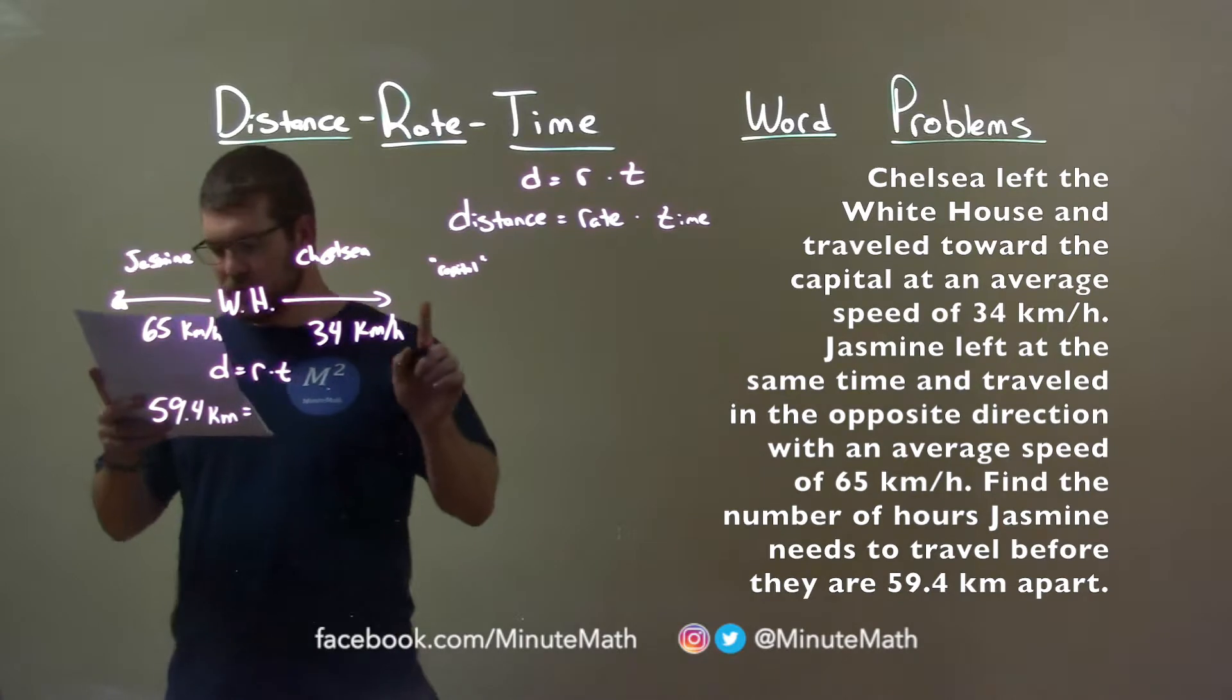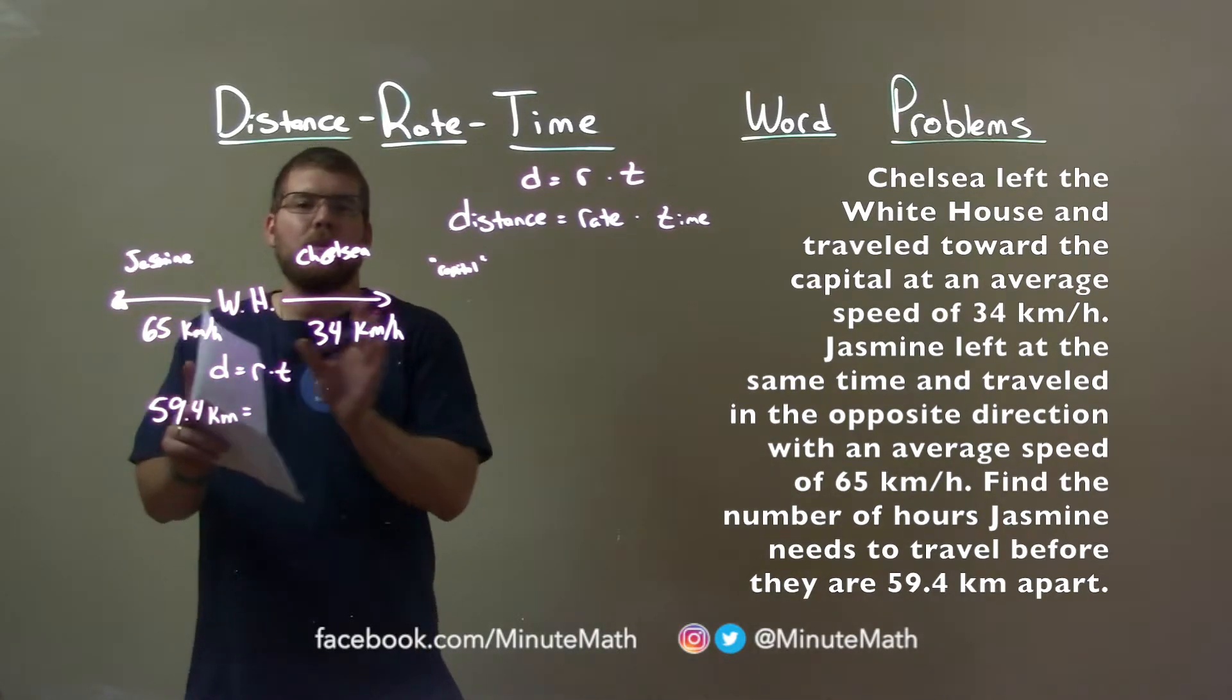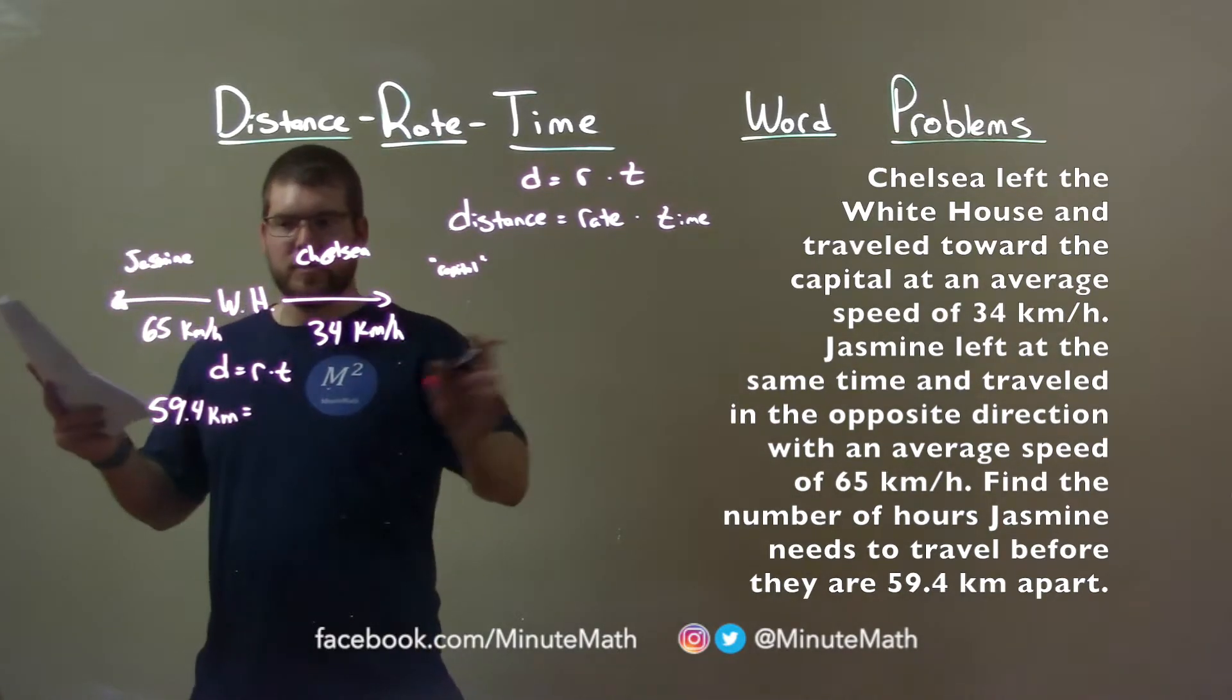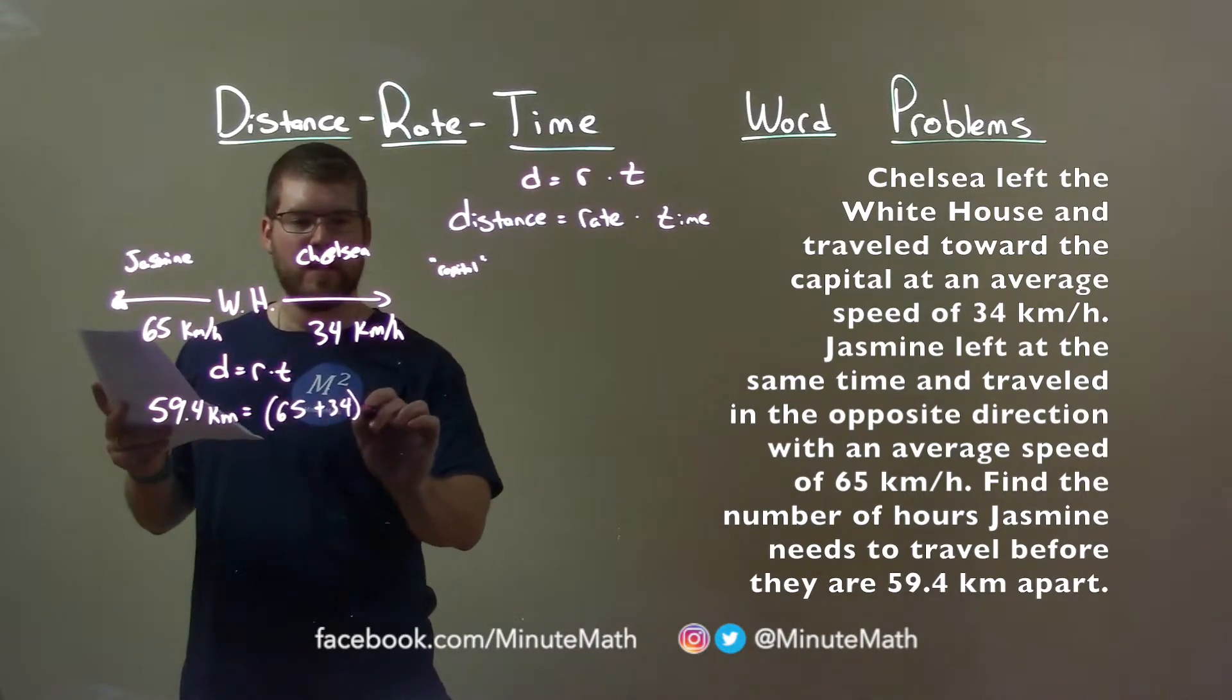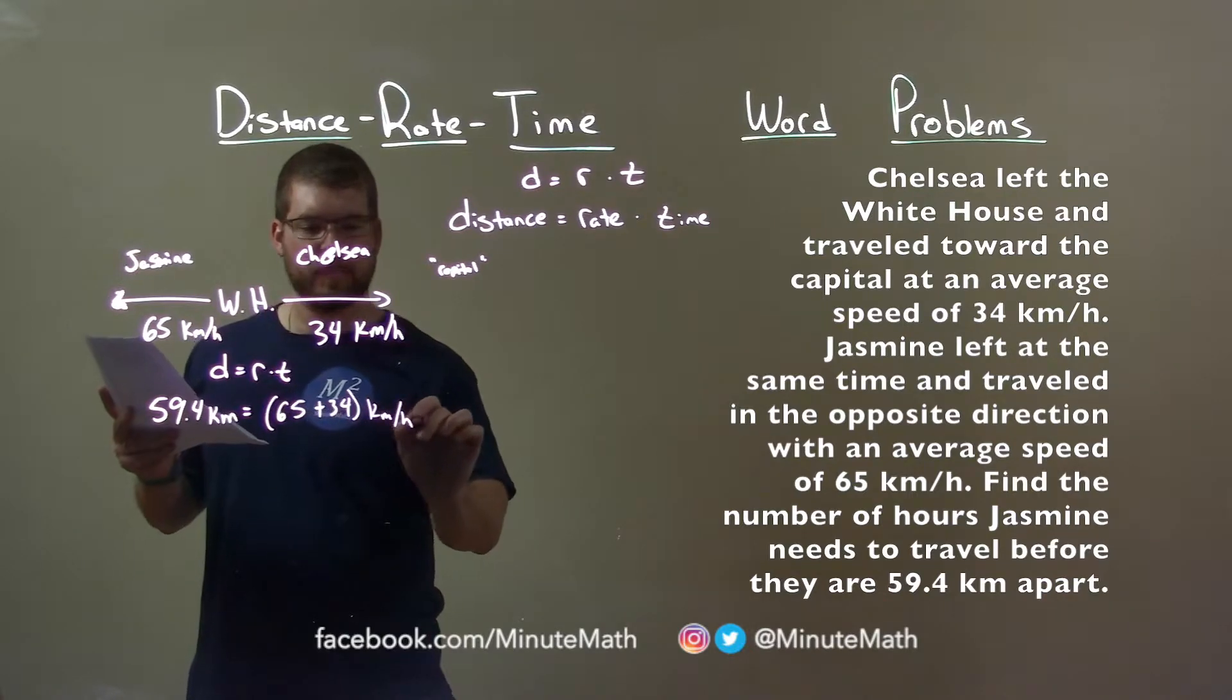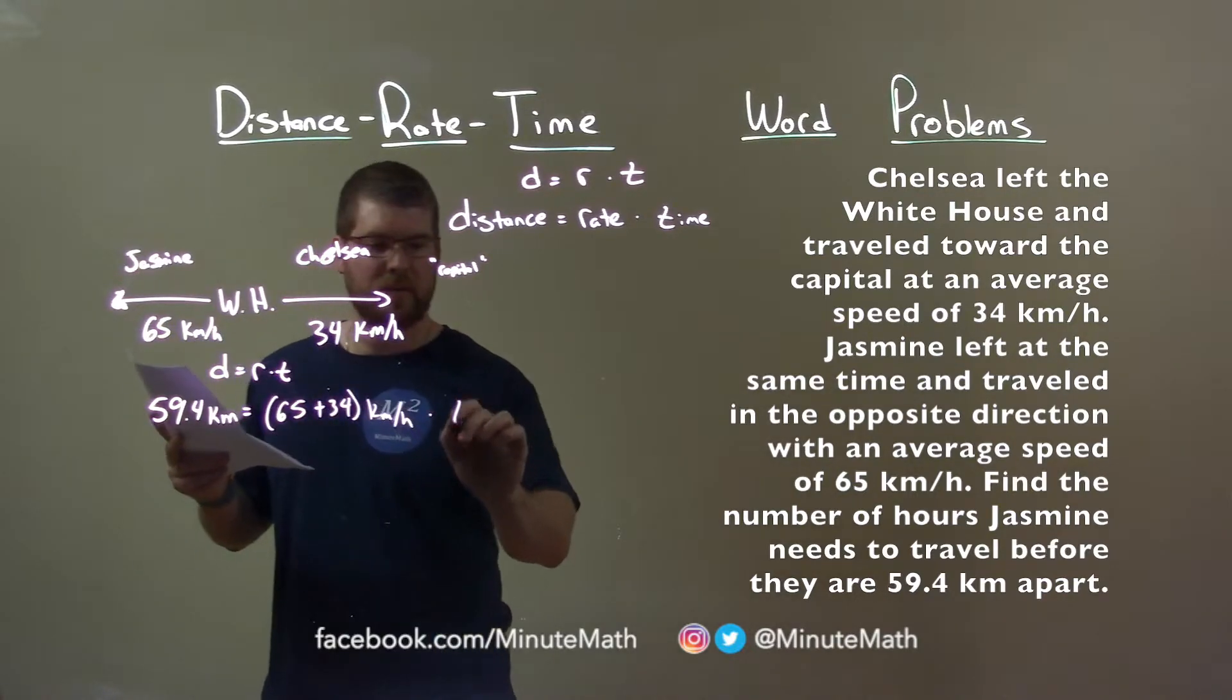Since they're traveling in opposite directions, the rate at which they are separating from each other is adding both these rates together. 65 plus 34. That's our rate, kilometers per hour, times a total time of T.